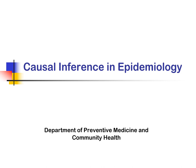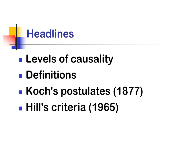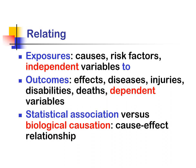Good afternoon. Today our discussion would be on causal inference in epidemiology. Included in this lecture would be discussing levels of causality, definitions, Koch's postulates, Hill's criteria, and Susser's criteria. It relates to exposures which may cause or be risk factors or independent variables to different outcomes — effects, diseases, injuries, disabilities, deaths, and dependents. We will also learn statistical association versus biological causation and the cause-effect relationships of people.